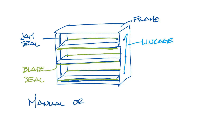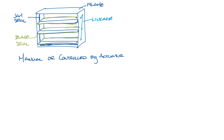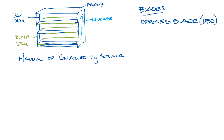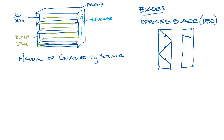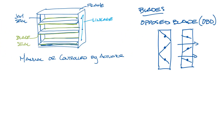Dampers can be manually operated or controlled by an actuator. Now let's look at different types of blades. First of all, dampers can have opposed blades, where each blade moves in the opposite direction of the blade next to it. The benefit of this is that the air moves pretty much straight through the damper regardless of the position of the blades, giving you good uniform airflow leaving the damper.